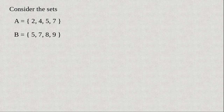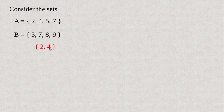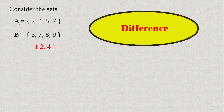Using an example, consider the sets A = {2, 4, 5, 7} and B = {5, 7, 8, 9}. I am going to write a new set by operating on these two sets. The new set is {2, 4}. What is the peculiarity of this set? The elements in this set are the elements in A but not in B. So {2, 4} is the set of elements in A but not in B. This set is called the difference of A and B.